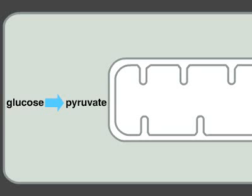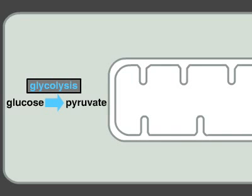Cells break down food molecules, such as glucose, through multi-step pathways. For example, in the process of glycolysis, breakdown of glucose molecules releases energy that is captured by the energy carrier molecules ATP and NADH.